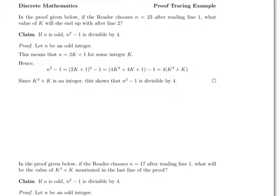So here I've captured two questions that are similar to the quiz problems, but of course these have different proofs. In the problem it says that the reader chooses n equals 23 after reading line 1. So they're talking about reading the proof here, so this is line 1 of the proof.